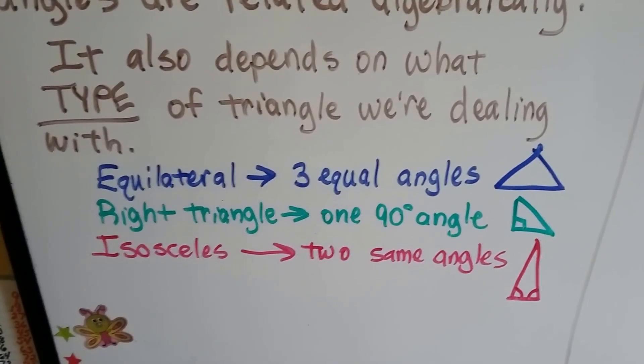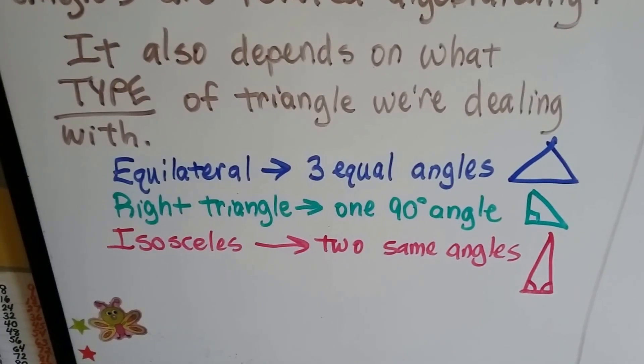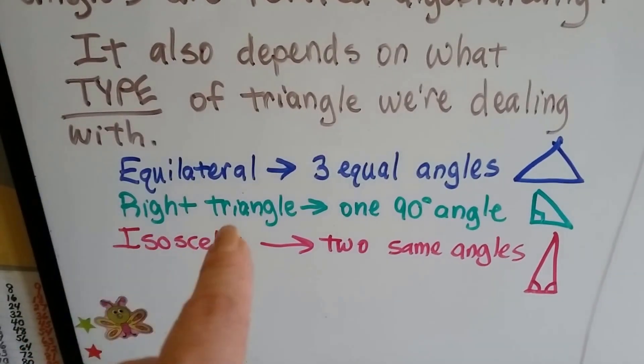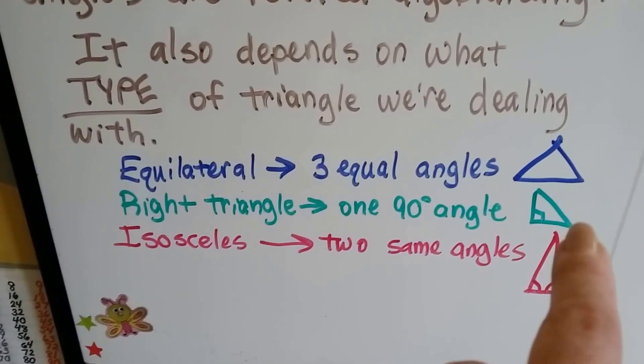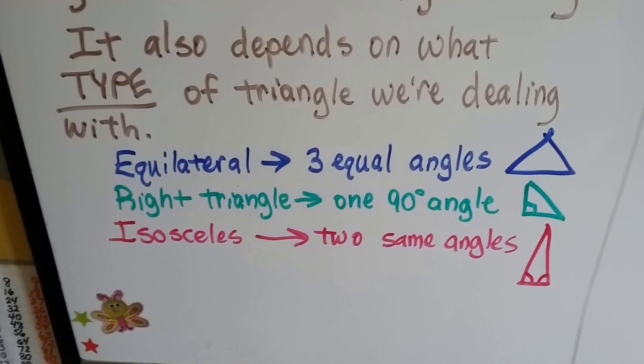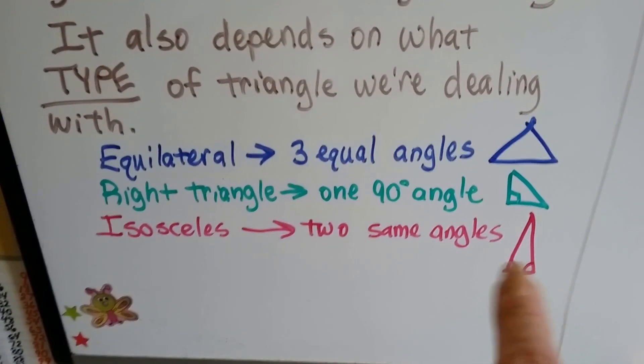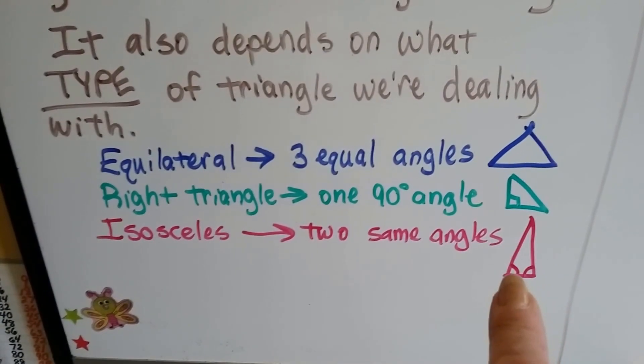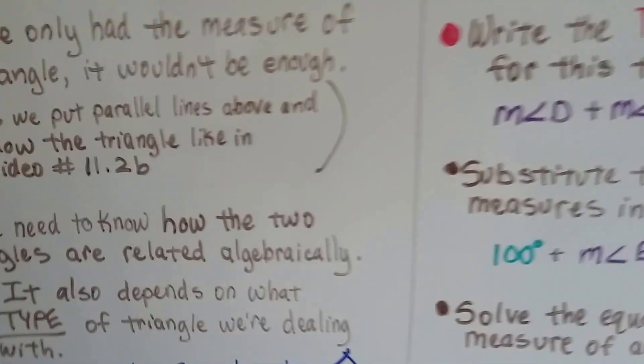In a right triangle, we know one angle is a 90-degree angle. So if we have the knowledge that it's a right triangle and we have one other angle, then we can use that to find the third one. For an isosceles triangle, we know that the two base angles are the same and they're congruent. So if we have just one of those, we could find it.